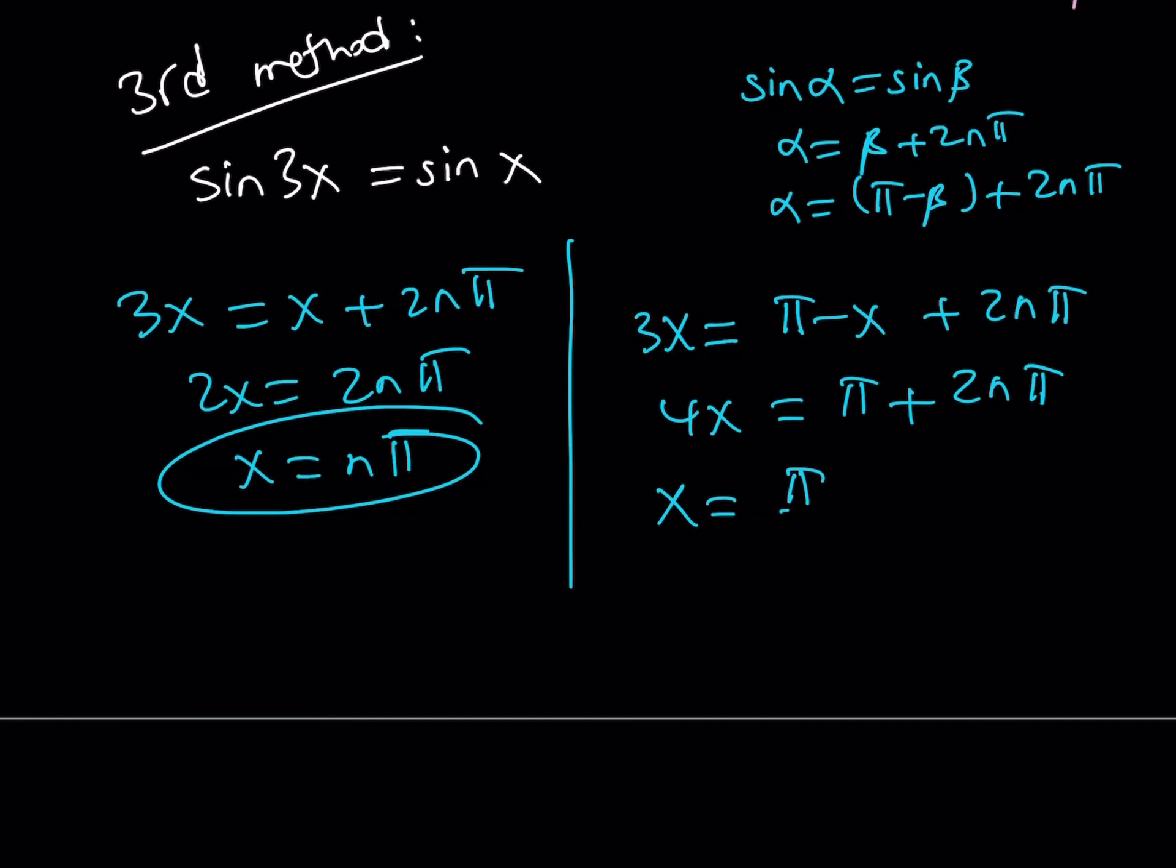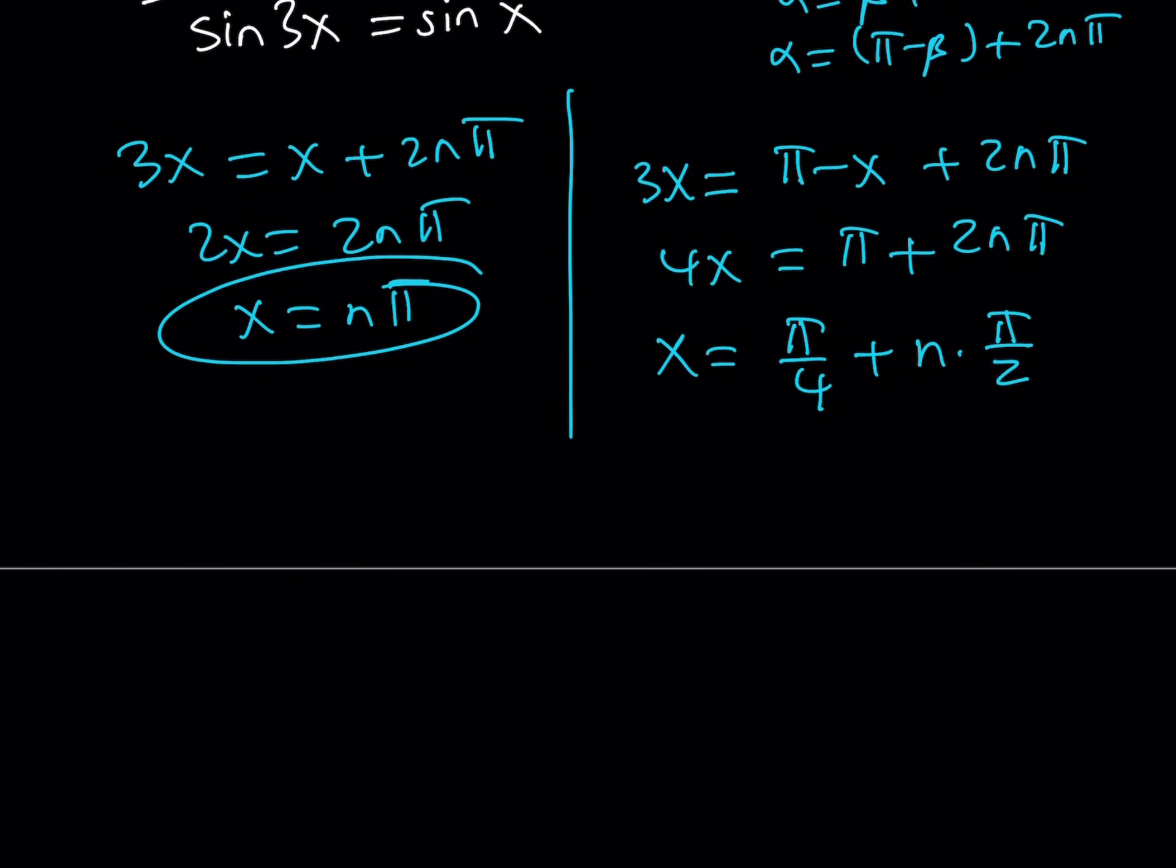Alright? Ready? x is equal to pi over 4 plus... Now, if you divide both sides by 4, you're going to get n times pi over 2 from here. And, now, if you make a common denominator, you're going to get pi plus 2n pi divided by 4. And, by factoring out the pi here, you can basically write the second set of solutions as 2n plus 1 multiplied by pi over 4.